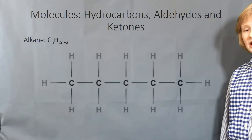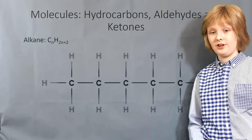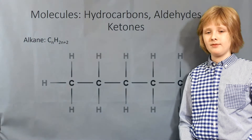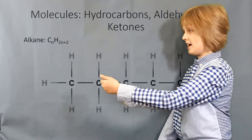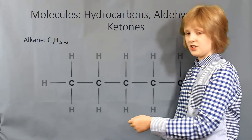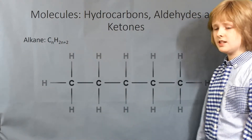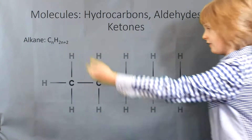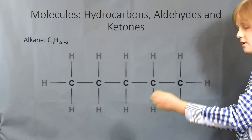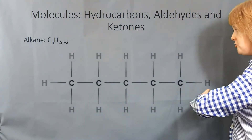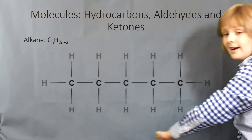This is an alkane. I've got pentane here for an example. Alkanes have the general formula CnH2n+2. So you can see that I've got five carbon atoms with hydrogen atoms attached all the way around.